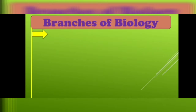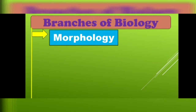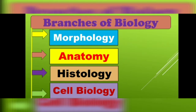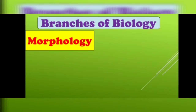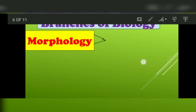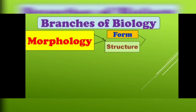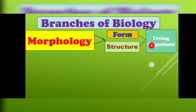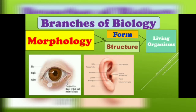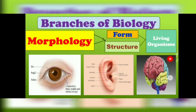Now we are going to discuss a few branches of biology. The first one is morphology, the second is anatomy, the third is histology, and the fourth is cell biology. Morphology is defined as the study of form and structure of living organisms. For example, the study of the form and structure of the eye, ear, and brain — all of these are included in morphology.